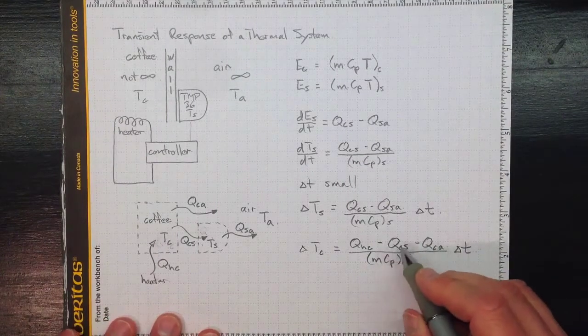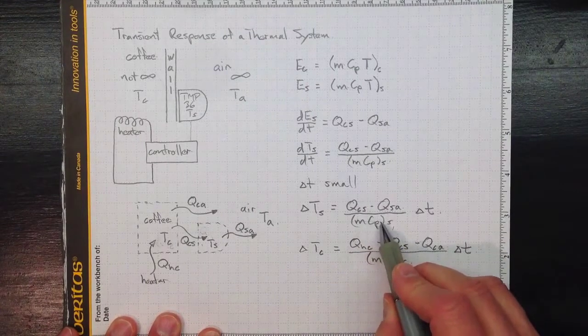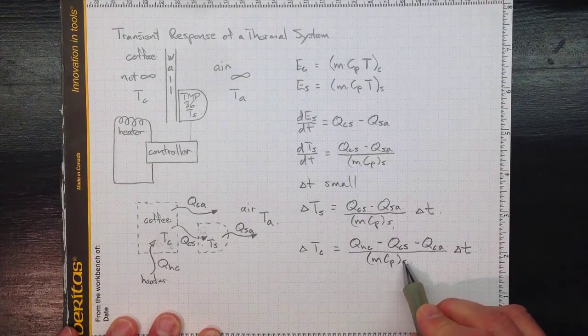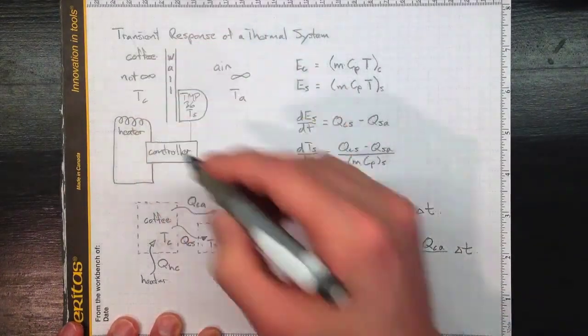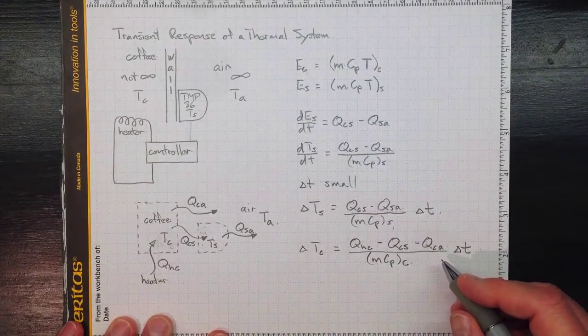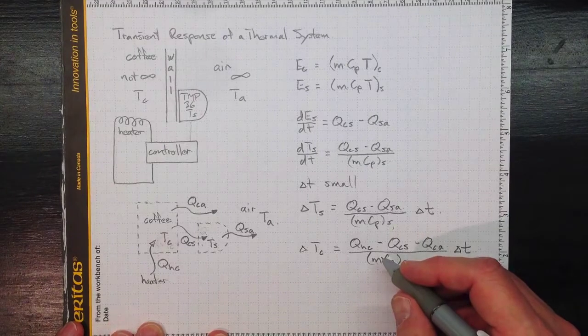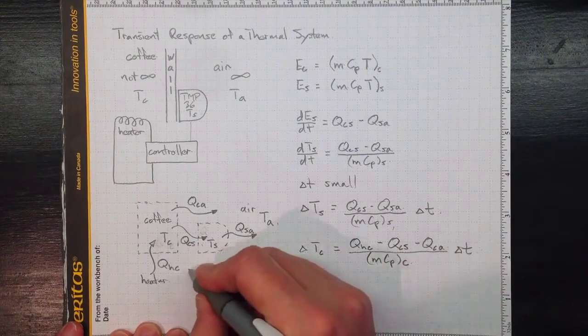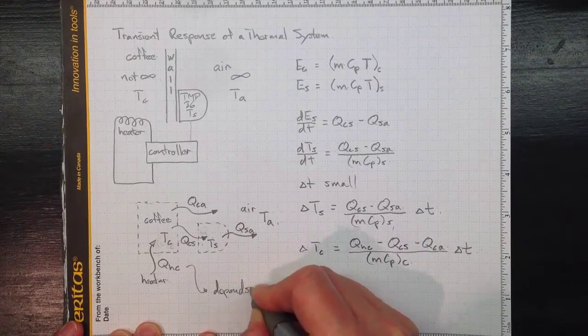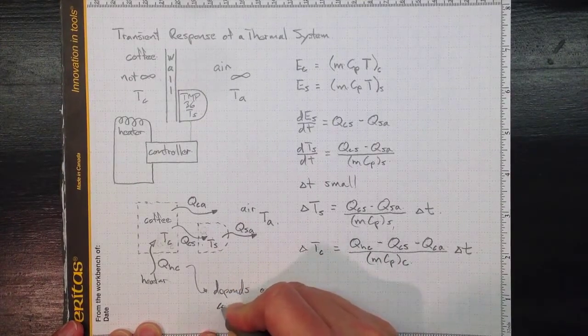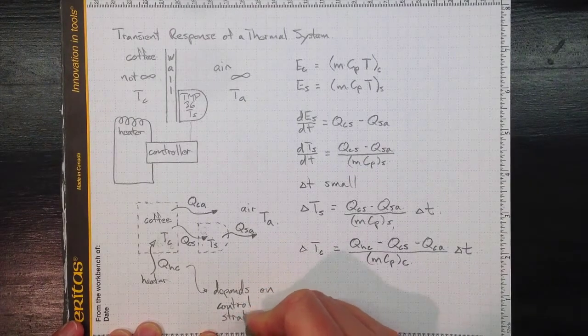Now, where do we get the things that go into here? Well, we need to know about the properties of our sensor, its mass and specific heat, or whatever this block is. We need to know what Q_HC is. And that really depends on our program. It depends on our control strategy.